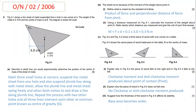In part B, the examiner says that the sheet turns because of the moment of weight about point A. The examiner asks you to define what is meant by the moment of a force. You write down the definition: the moment is the product of force and perpendicular distance of the force from the pivot.